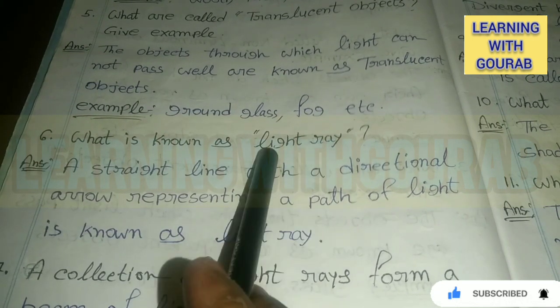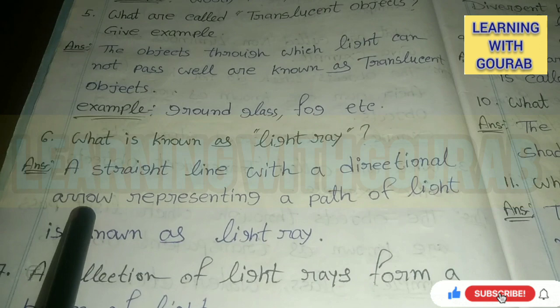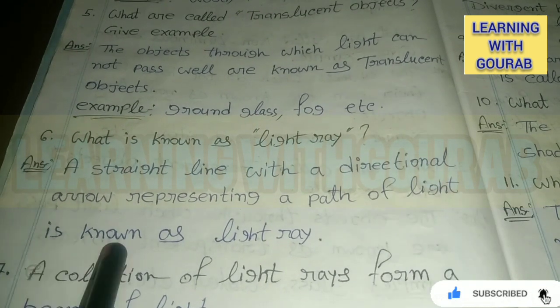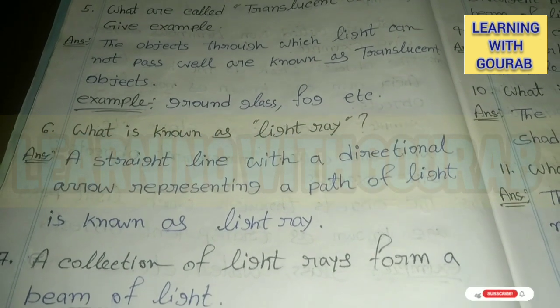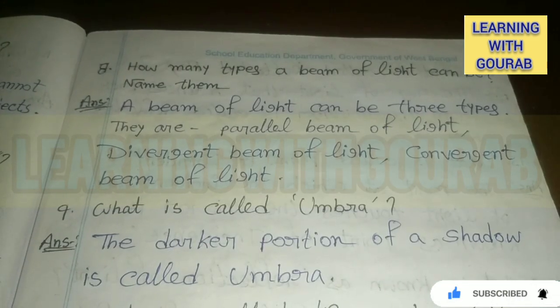Next: What is known as a light ray? Answer: A straight line with a directional arrow representing a path of light is known as a light ray. A collection of light rays forms a beam of light. A beam of light can be three types: parallel beam of light, divergent beam of light, and convergent beam of light.